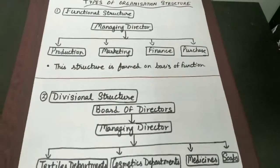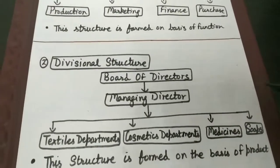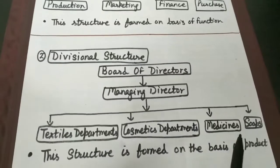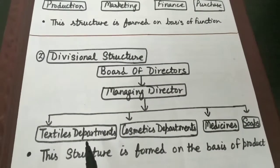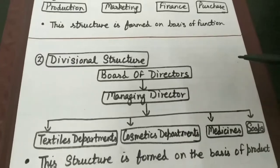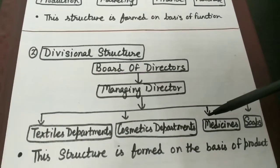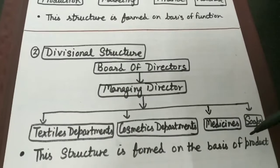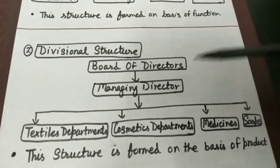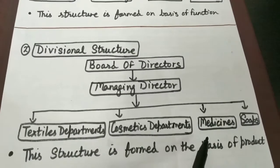Next we have divisional structure. Divisional structure mein, basically this structure is formed on the basis of products being produced within the organization. Jab ek organization jo hai, wo textiles mein bhi deal kar rhi hai, cosmetics mein bhi, medicines se bhi aur soap se bhi. Toh basically there are four products that organization is dealing with. Toh this organization mein 4 divisions hain — that is textile division, cosmetic division, medicine division and soap division. Toh basically we are dividing the whole organizational work on the basis of these four products. Yahan board of directors ki under we have managing director, and this managing director is having four divisions under him: textile department, cosmetic department, medicine and soap.